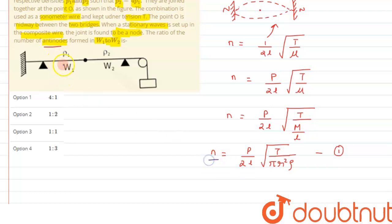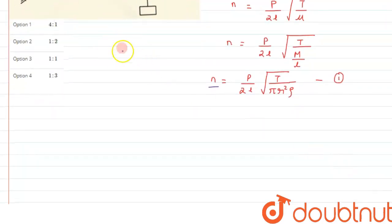Now from here we can say n, that is the fundamental frequency for both the wires, wire one and wire two, will be the same because the wire is continuous as the wire is joined at point O.